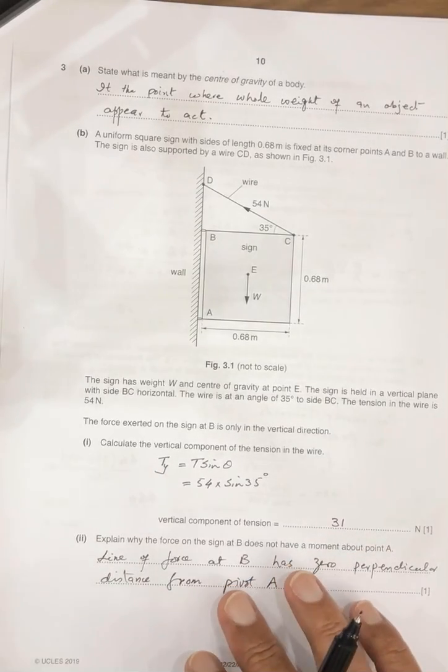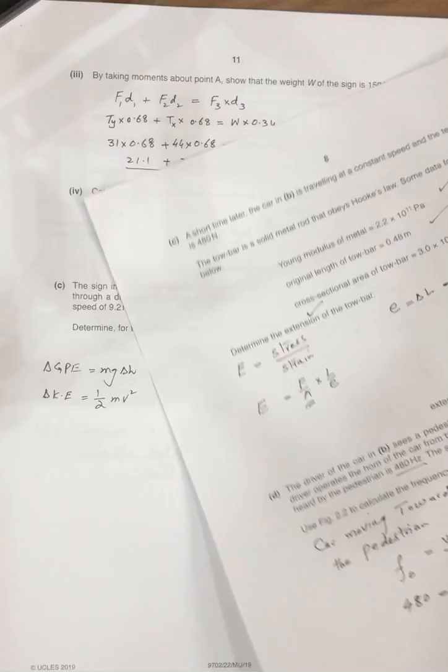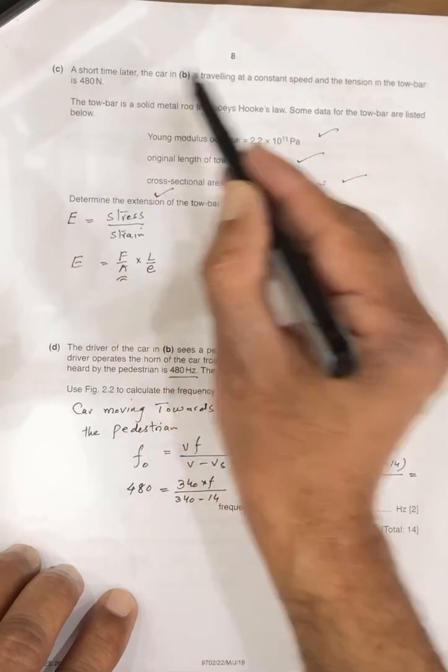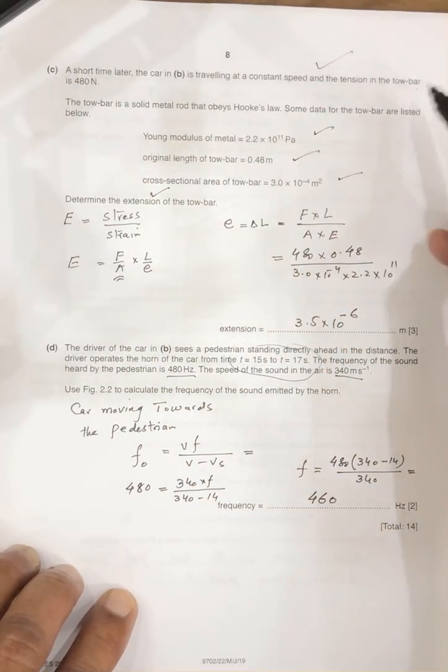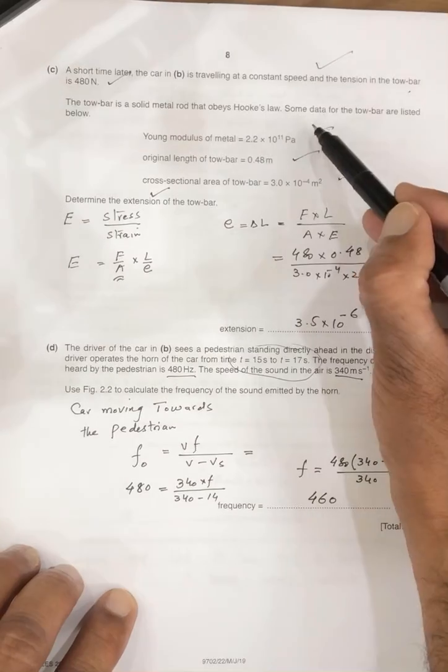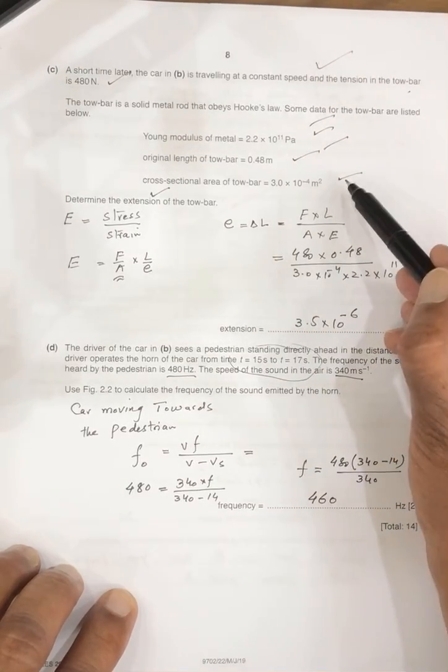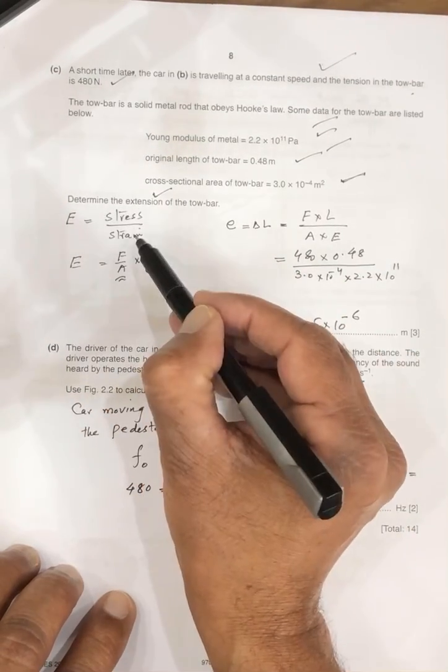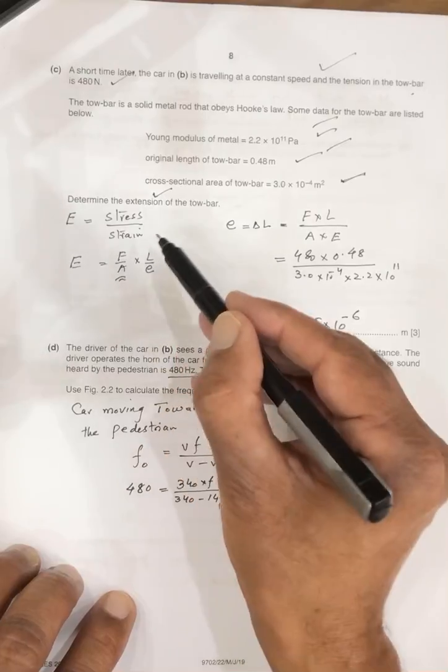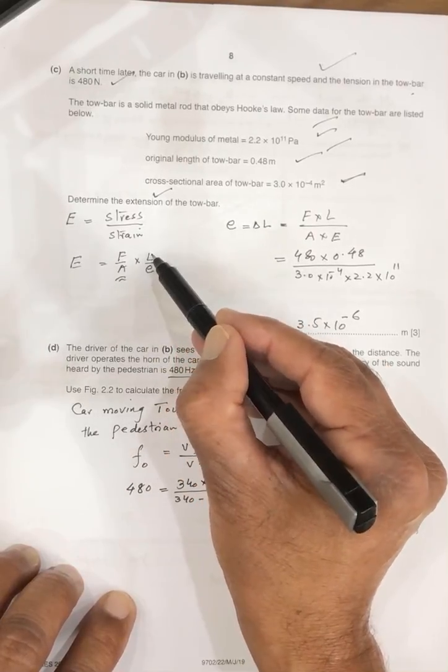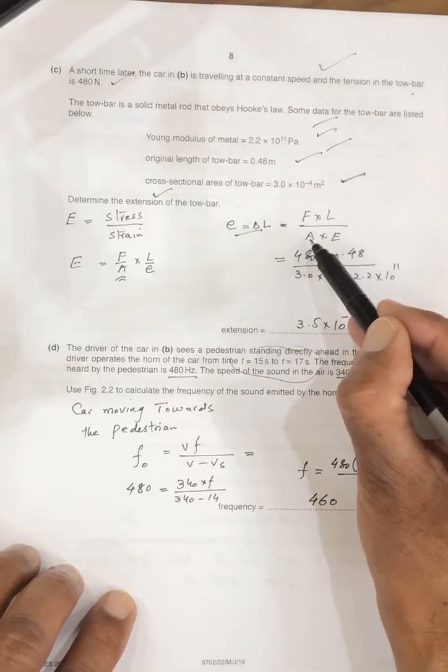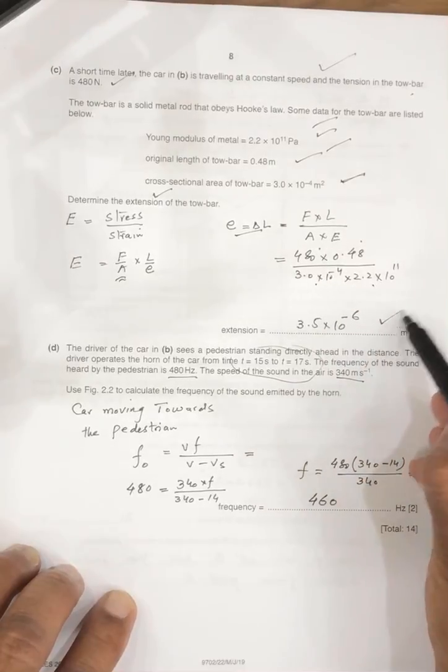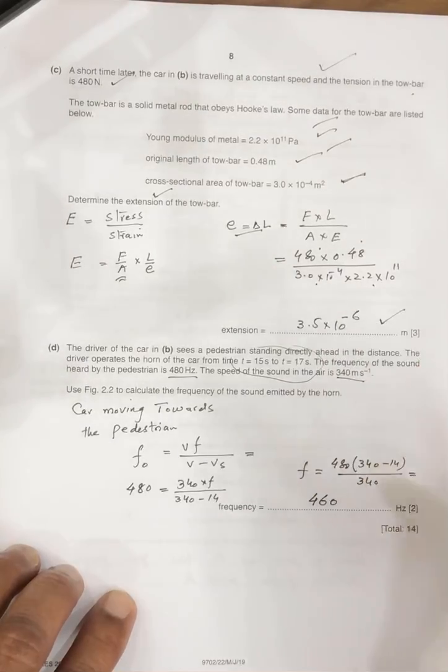Next question, same question and it's C part. Look, after short time, the car traveling at the constant speed, and tow bar has force for 80, Young modulus given, original length given, and the cross-sectional area given, and extension in the tow bar is required. Young modulus stress over strain, stress force divided by area, strain extension over length. So extension is equal to FL over AE. Put the values, force, length, cross-sectional area, Young modulus, so answer is 3.5 into 10 power minus 6.